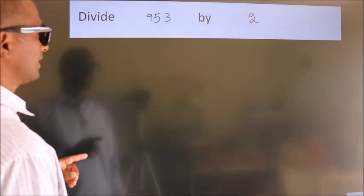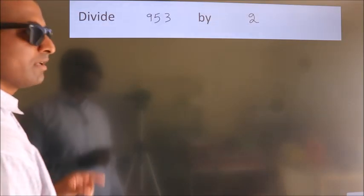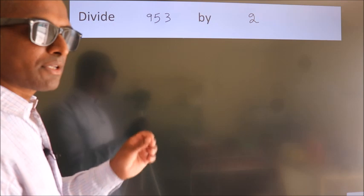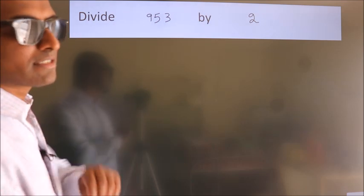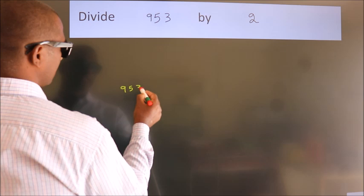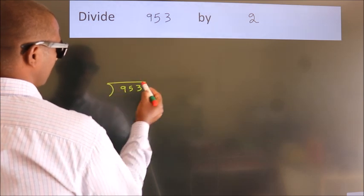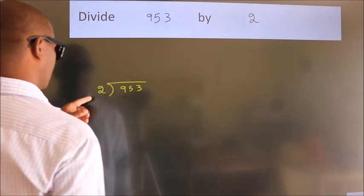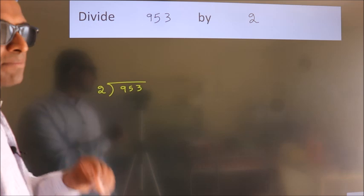Divide 953 by 2. To do this division, we should frame it in this way: 953 here, 2 here. This is your step 1.